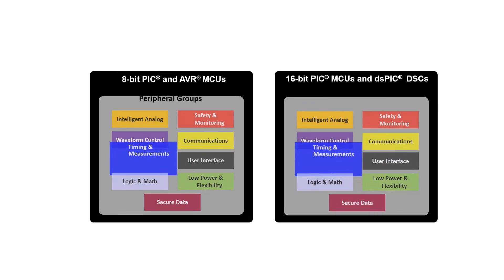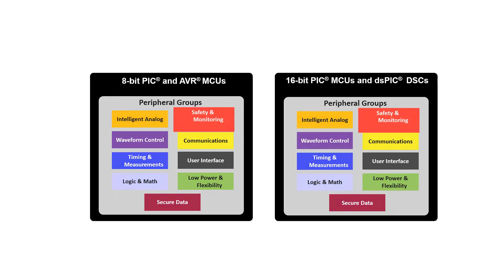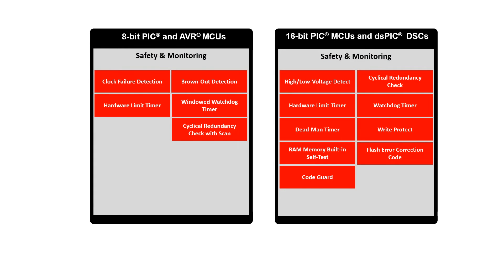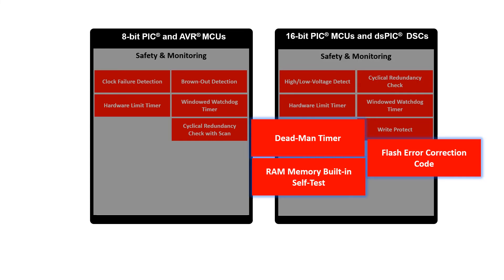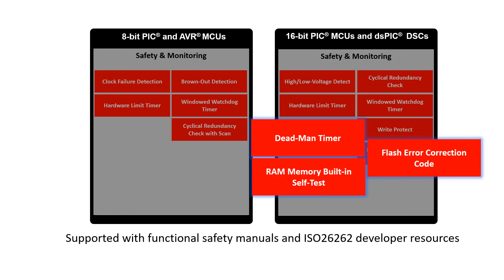Both architectures also include peripherals designed to ease the development of safety-critical applications, such as those requiring UL or Class B certification. Monitoring of software integrity is made easier using cyclic redundancy checkers to monitor for inadvertent changes to application firmware, while windowed watchdog timers eliminate software hangup conditions. Select 16-bit devices further implement a deadman timer, flash error correction code, and RAM memory built-in self-test for further monitoring application firmware robustness. Some 16-bit devices are also supported with functional safety manuals and diagnostic software to ease ISO 26262 compliance for ASIL applications.